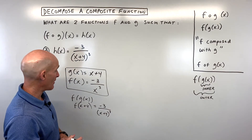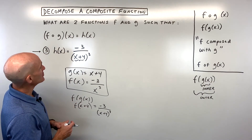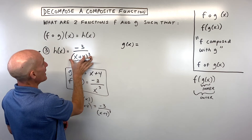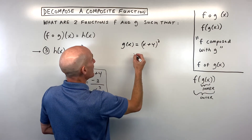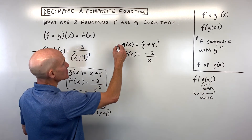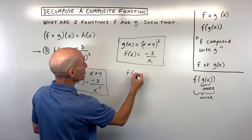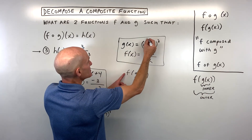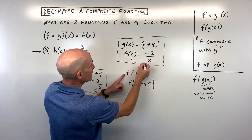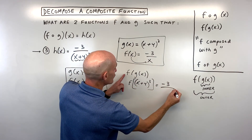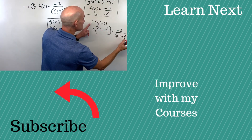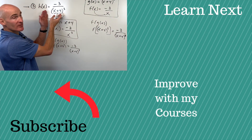You might have gotten something different, and there certainly is another way. For example, the inner function g of x could equal x plus 4 cubed, and then the outer function f of x could be negative 3 over x. When you compose these, g of x — the whole quantity x plus 4 to the third power — goes in for x on the right, giving negative 3 over x plus 4 cubed, which is exactly our original h of x function.